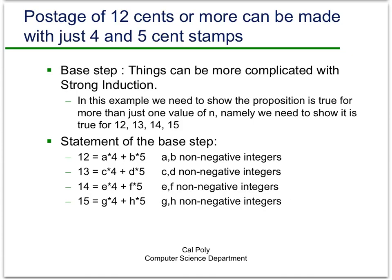In this example we need to show that the proposition is true for more than one value of n. Namely, we need to show that it's true for 12, 13, 14, and 15. So we need to show that 12, 13, 14, and 15 cents can each be made from just 4-cent and 5-cent stamps. You'll see why I picked these values when we get to the inductive step.